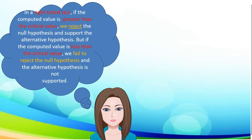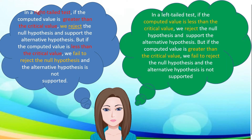Another thing to remember: in a right-tail test, if the computed value is greater than the critical value, we reject the null hypothesis and support the alternative hypothesis. In a left-tail test, if the computed value is greater than the critical value, we fail to reject the null hypothesis and support the alternative hypothesis.